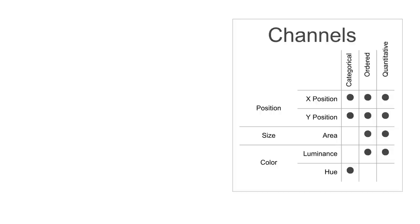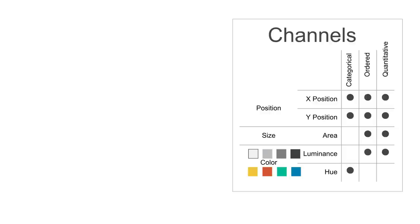Let's go a little deeper into channels. When I say position, this could be X position or Y position — they're independent of one another. When I say size, what I really mean is the area of that shape, like the area of a circle. Within color, you can break it down into two orthogonal dimensions: luminance, the variation of brightness, and hue, the variation of what people typically think of as color — like red, blue, and green — whereas variations of luminance would be like light blue or dark blue.